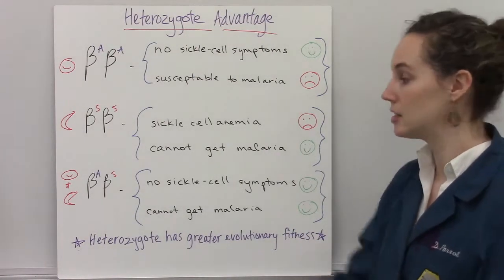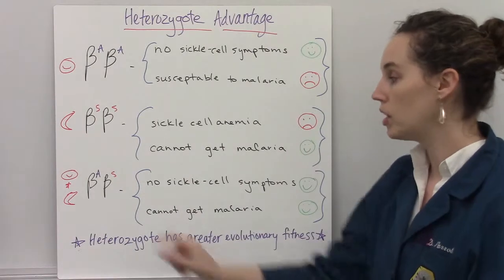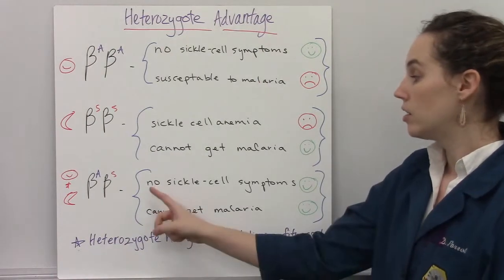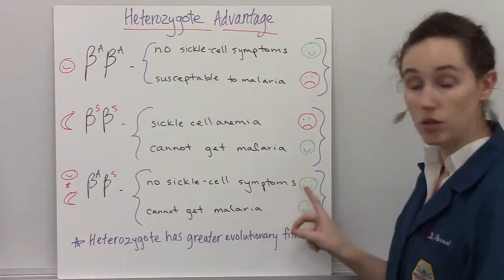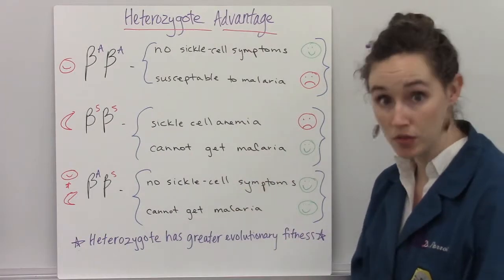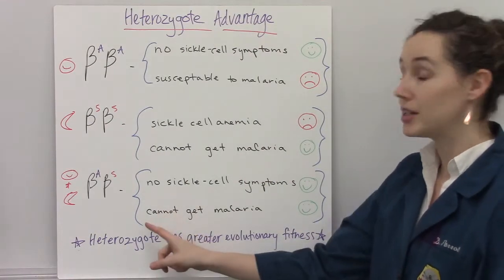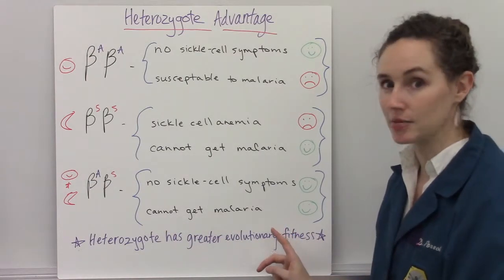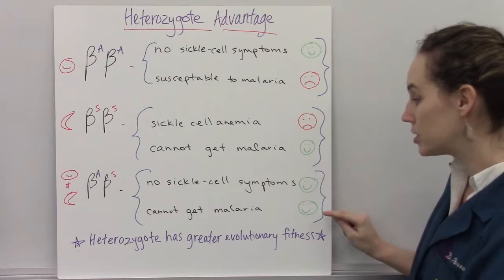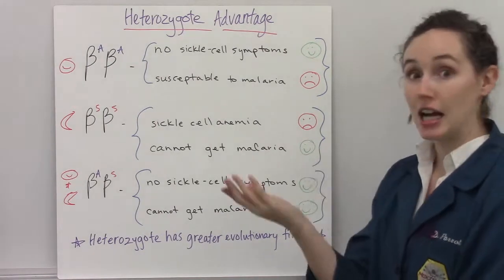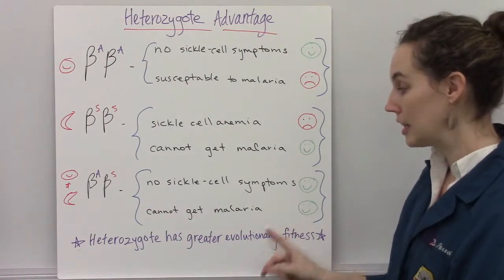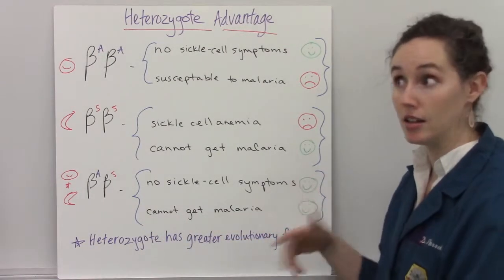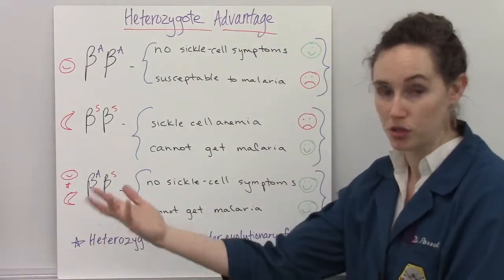If you're heterozygous and have one allele for normal and one allele for the sickle hemoglobin, you produce both shapes of cells. You do not show any of the crisis symptoms of sickle cell, but you also get the same benefit in that you cannot get malaria. So you can see that being heterozygous allows you an evolutionary advantage — not being able to get malaria is obviously going to help you survive and reproduce better.